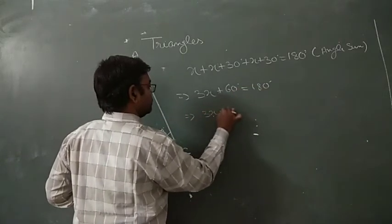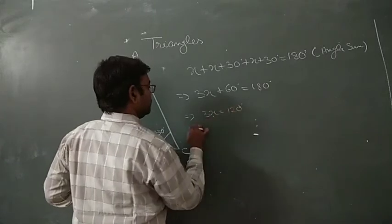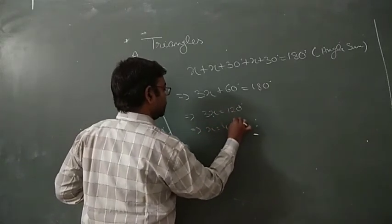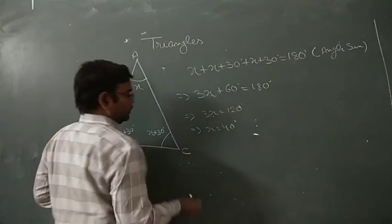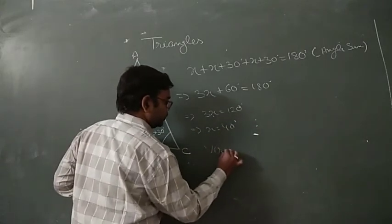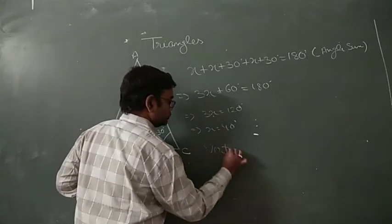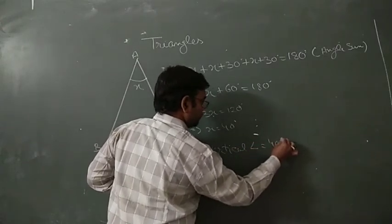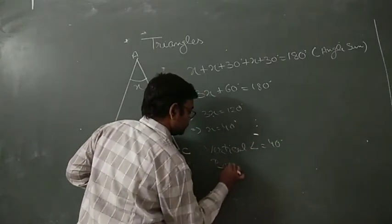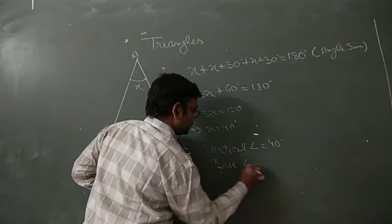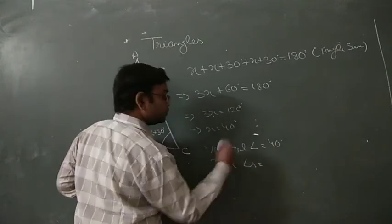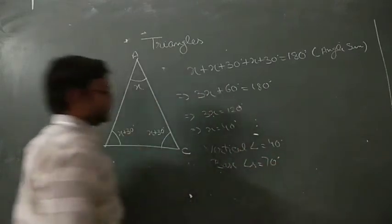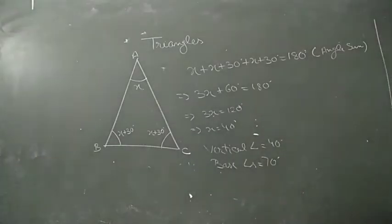So 3x equals 120, giving x equals 40 degrees. Therefore the vertical angle is 40 degrees and the base angles equal 70 degrees each, since 40 plus 30 is 70. I hope this is clear.